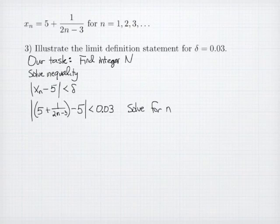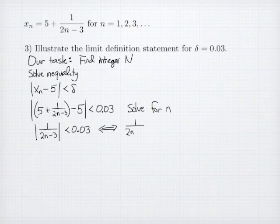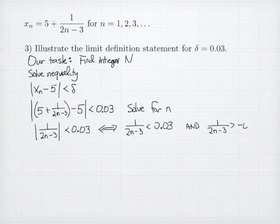And we want to solve this for our index n. When I simplify the formula in absolute values, I get the absolute value of 1 over 2n-3 has to be less than 0.03. So whenever we have an inequality that involves absolute value is less than a number, that inequality can be replaced by two inequalities. So the single inequality can be replaced by 1 over 2n-3 is less than 0.03, and 1 over 2n-3 is greater than negative 0.03.